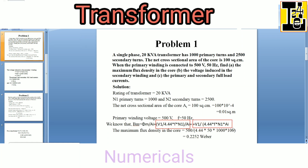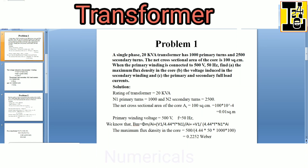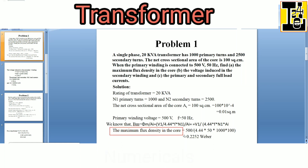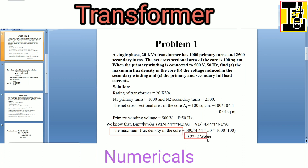Finally we get the expression as V1 divided by 4.44 into f into N1 into AI. After substituting all the given values, we get the maximum flux density in the core Bm as 0.225 Weber per meter square.